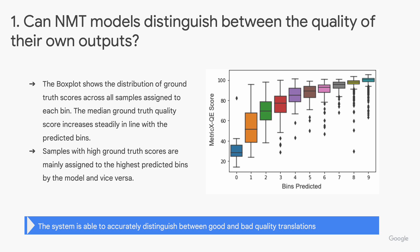Our first result shows that NMT models can in fact distinguish between the quality of their own outputs. The box plot here shows the distribution of ground truth scores across all samples assigned to each bin. We see that the median ground truth quality score increases steadily in line with the predicted bins, and samples with high ground truth scores are mainly assigned to the highest predicted bins by the model and vice versa. This indicates that the system can accurately distinguish between good and bad translations.